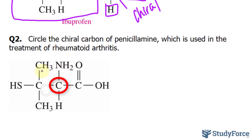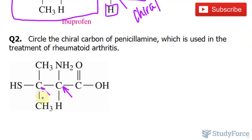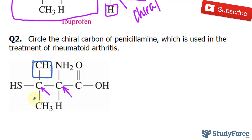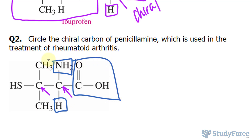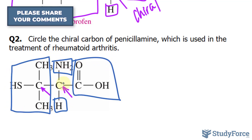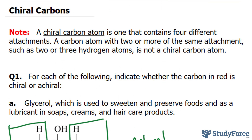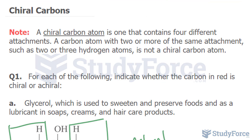Looking at this second carbon: one substituent is this whole group, then this H, and the rest. This other carbon only has three bonds. So it's either this carbon or this carbon. It won't be the first one because two of its substituents are the same, which makes it achiral. It has to be the other one, because all of its substituents are different. Therefore, that carbon right there is the chiral carbon in this molecule. And there you have it — our quick discussion on chiral carbons.